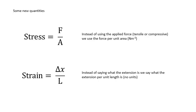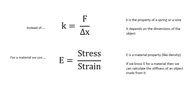We apply a stress and this produces a strain. So instead of K equals F over delta X, we use this quantity, capital E, which is stress over strain. K is the property of an object — for example, a spring or a wire — and it depends on the dimensions of the object. Capital E, which is stress over strain, is a material property, a bit like density. It's independent of the dimensions of the material; you can look it up in a data book. If we know E for a material, then we can calculate the stiffness of an object made from it.